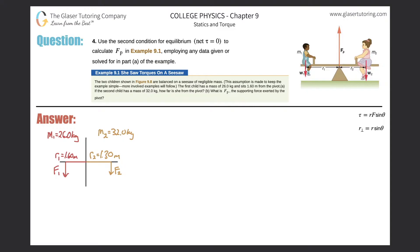Number four, use the second condition for equilibrium where the net torque equals zero to calculate FP in example 9.1, employing any data given or solved for in part A of the example.